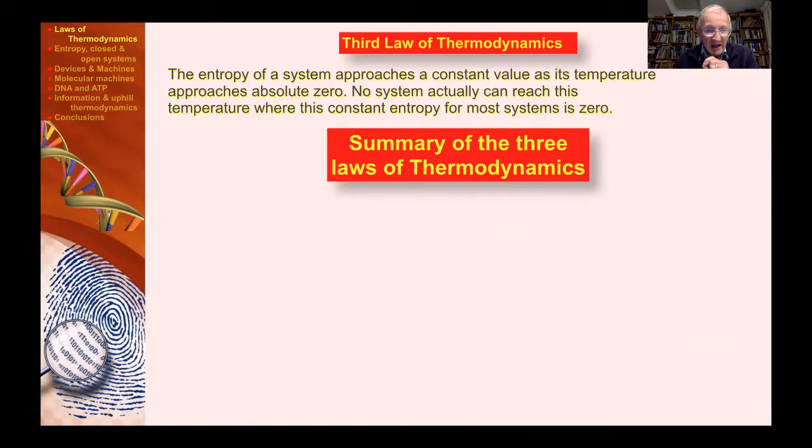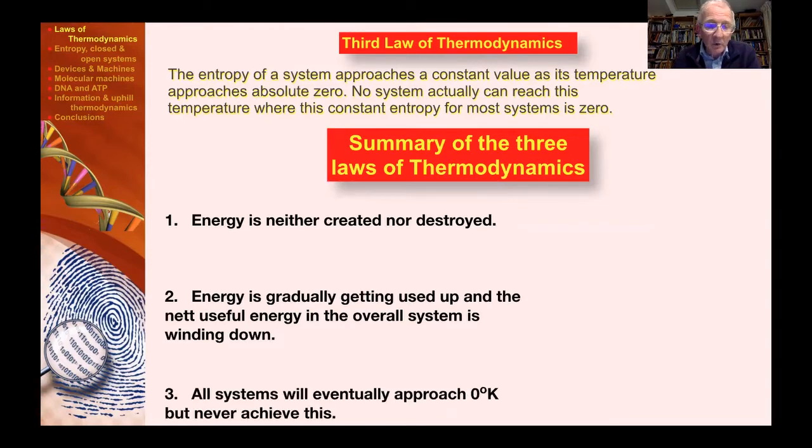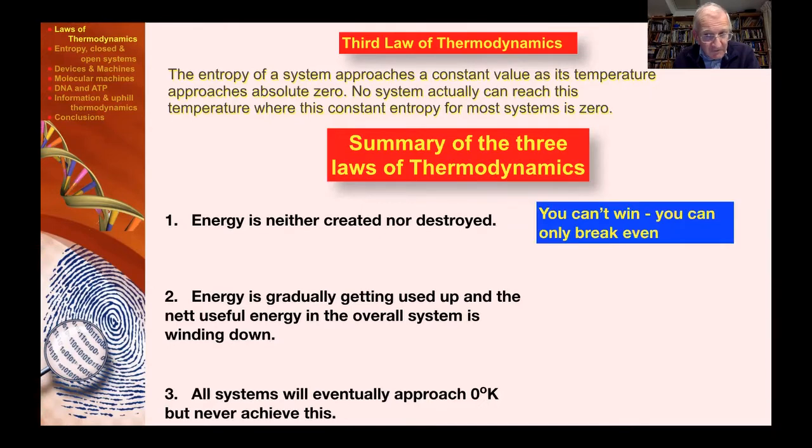No system actually can reach this temperature where the constant entropy for most real systems is actually zero itself. What this is saying is that there is a heat death which everything is heading to. There is a lowest possible temperature, the absolute zero of the Kelvin scale.